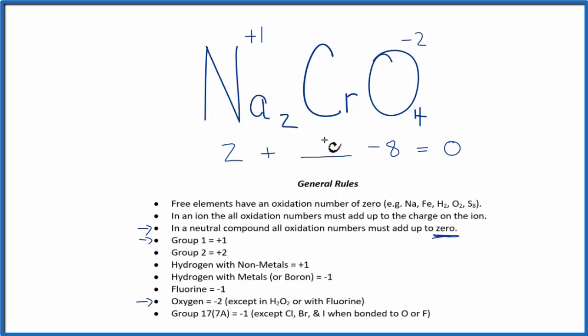So 2 plus 6 plus minus 8, that's 0. So the oxidation number on the chromium is plus 6.